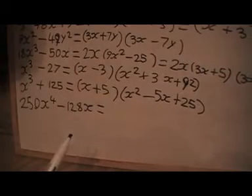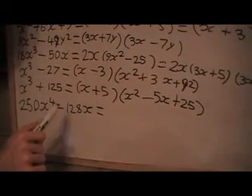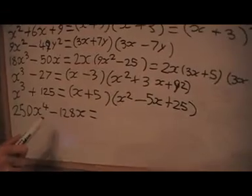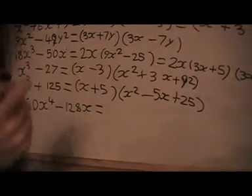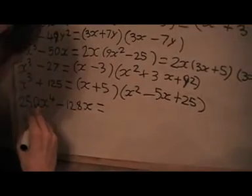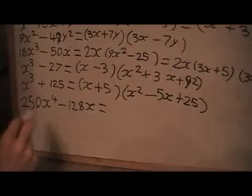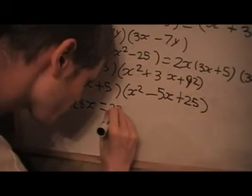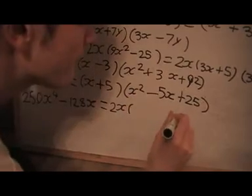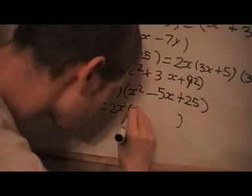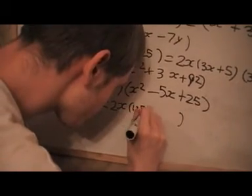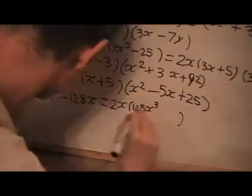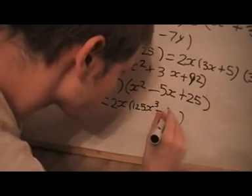And finally, this looks like a fourth power, but let's just see what happens here. I've got a common factor here. I don't know if you'll be able to see this common factor of 2x. And then I'll be left with 125x³ minus 64.